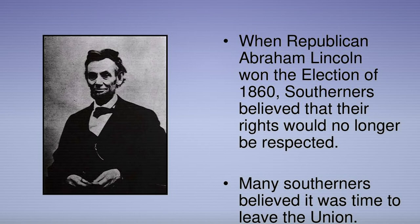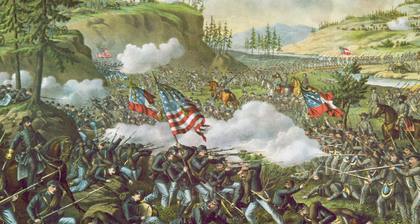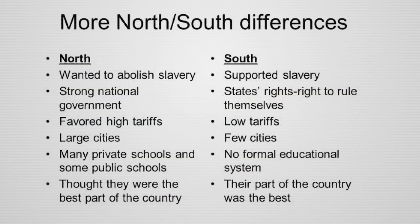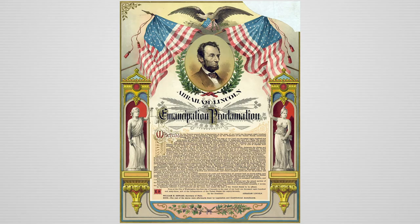In 1860, Abraham Lincoln is elected president, angering the southern states. In 1861, the Civil War begins between the northern states and southern states — the north wanted to abolish slavery whereas the south supported slavery. In 1863, Abraham Lincoln's Emancipation Proclamation proclaims that all slaves in rebellious territories are forever free.